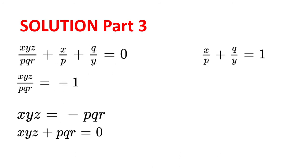Now, we know from the beginning that X divided by P plus Q divided by Y is equal to 1. And so we get XYZ divided by PQR is equal to minus 1. Multiplying both sides by PQR and then adding PQR, we get XYZ is equal to minus PQR, and therefore XYZ plus PQR is equal to 0, as required.